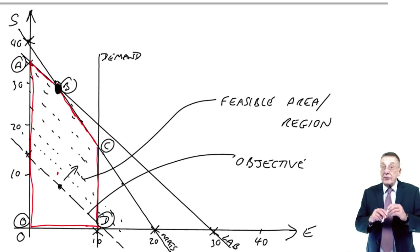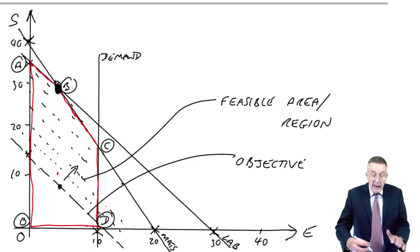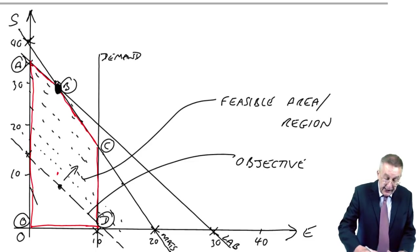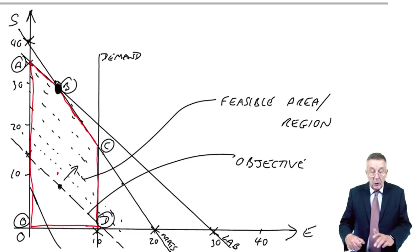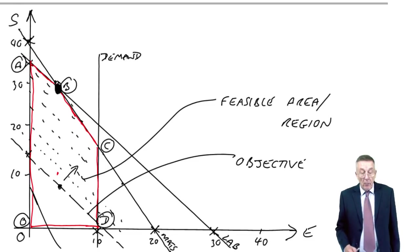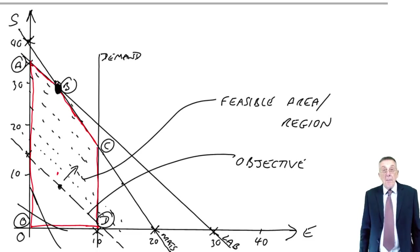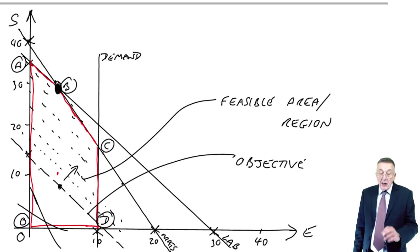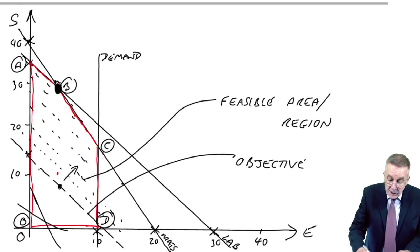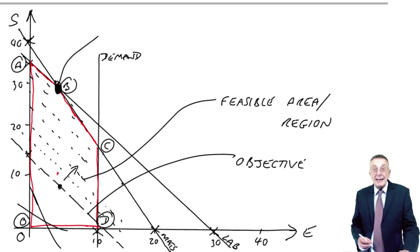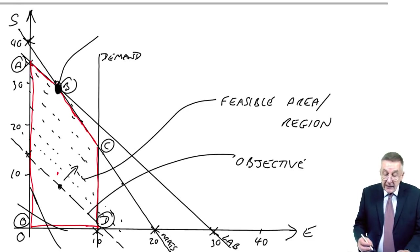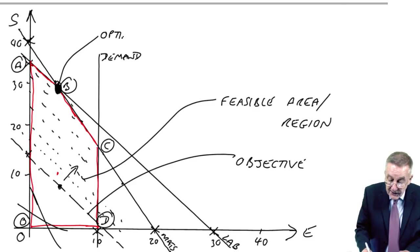Now, which point it is depends obviously on the angle of the line. If the angle of the line was like this, moving it away, the furthest point away is point C. If the angle of the line was like this, maybe the furthest point away is point A. It could be any of them. But because we know the angle of the line in this particular case, the furthest point away is point B. And so point B is our optimum, our best.